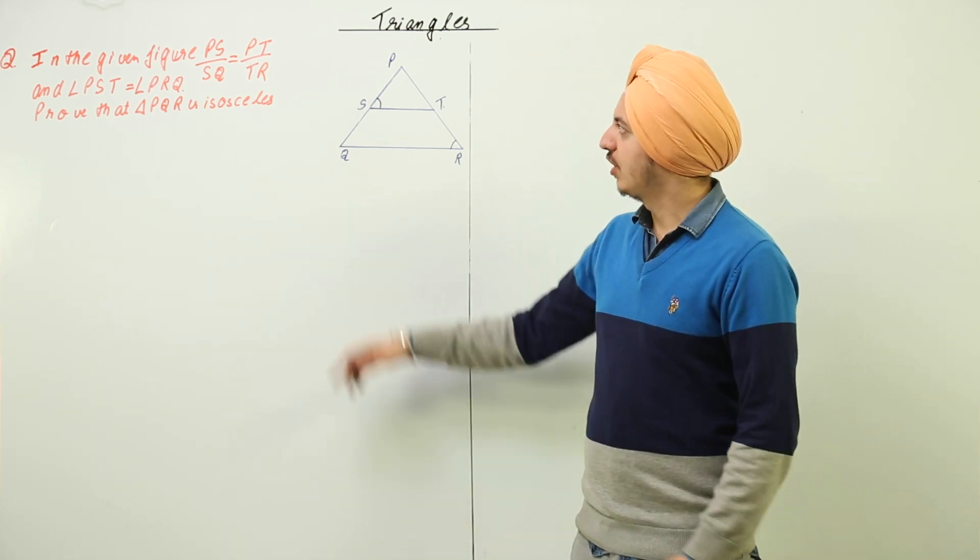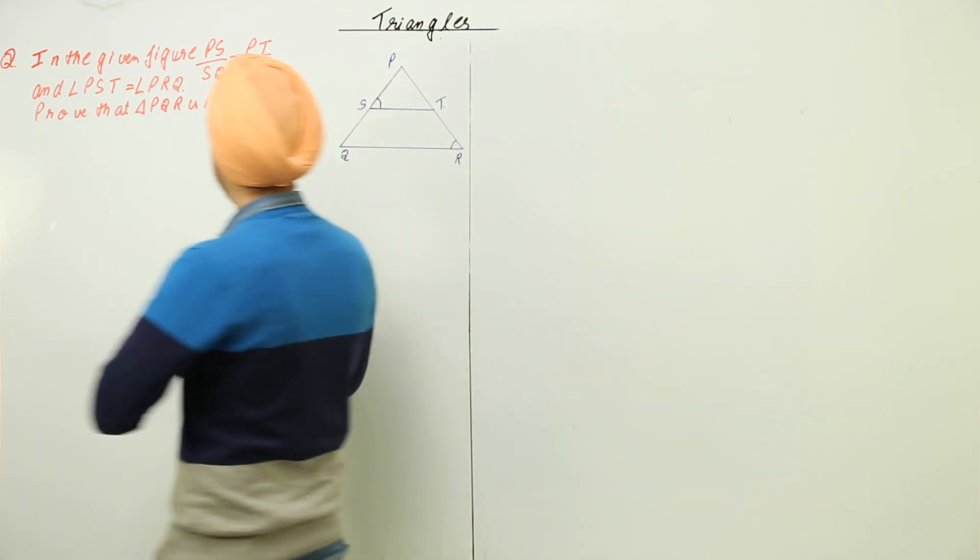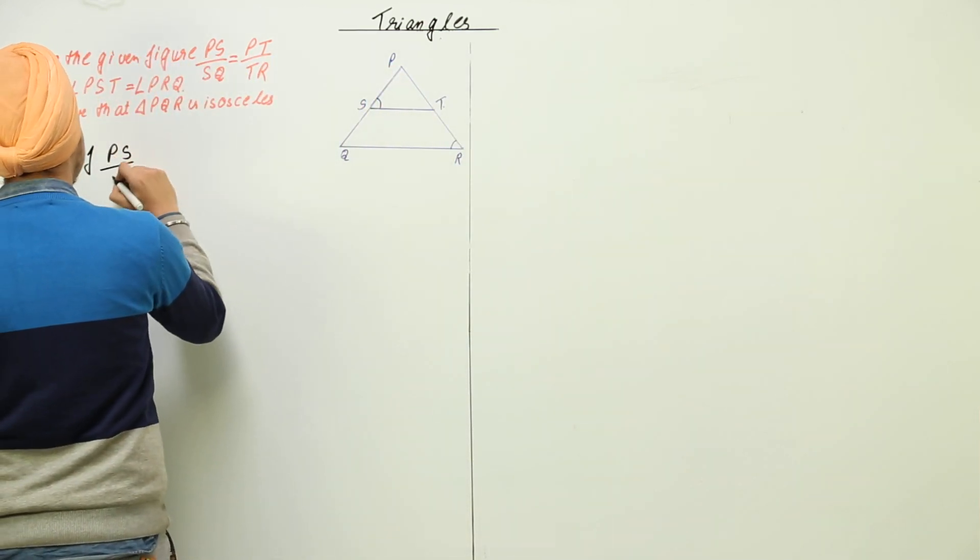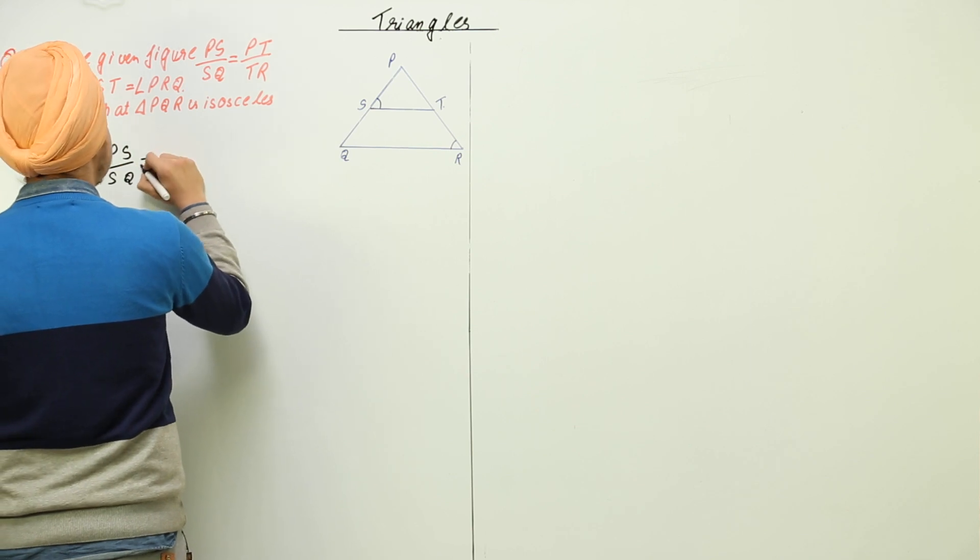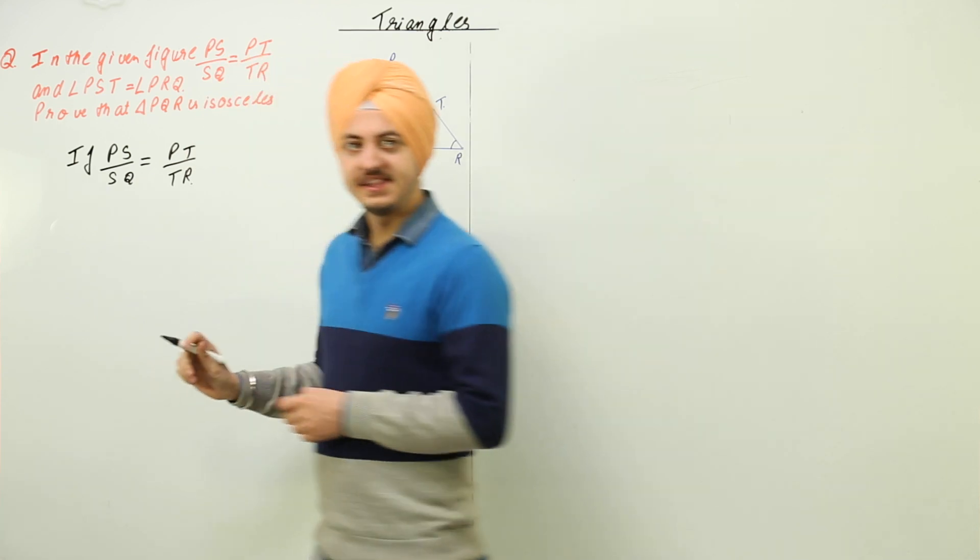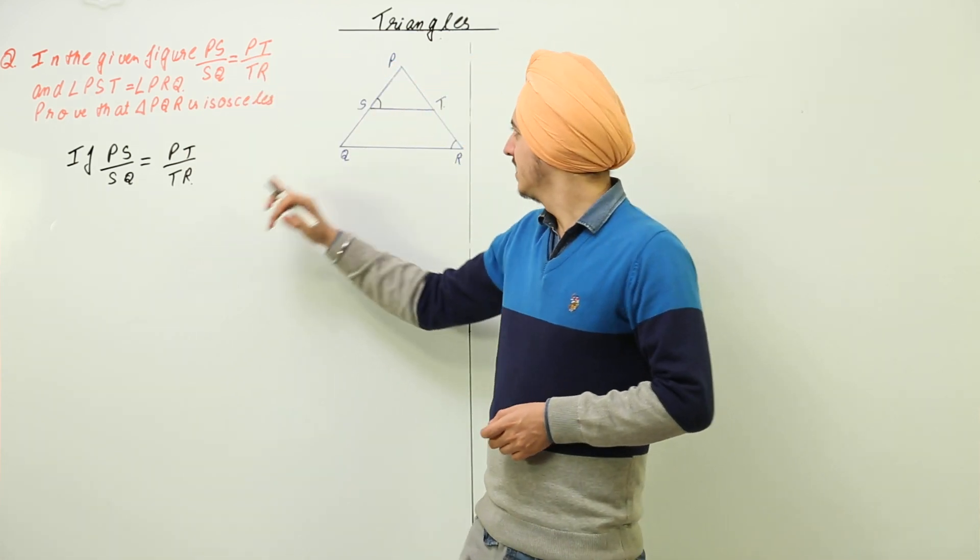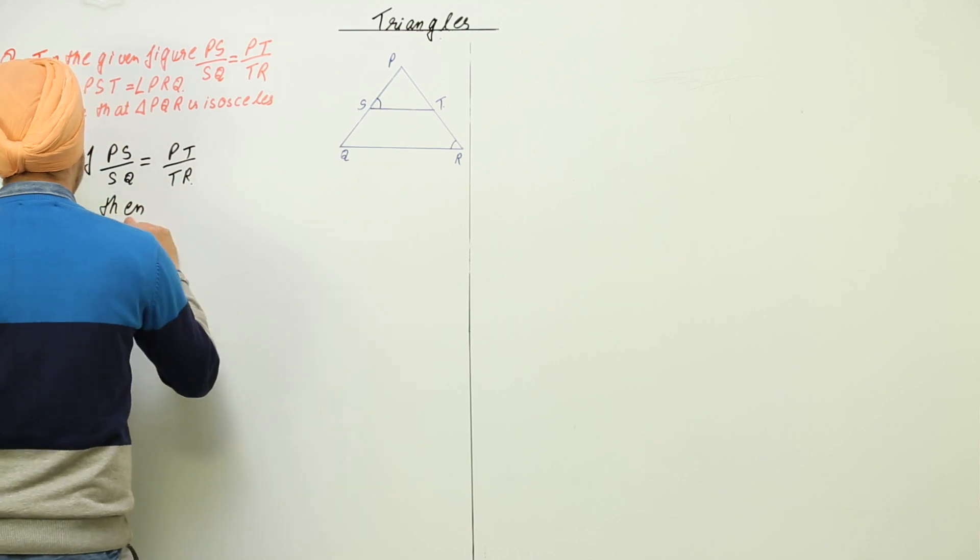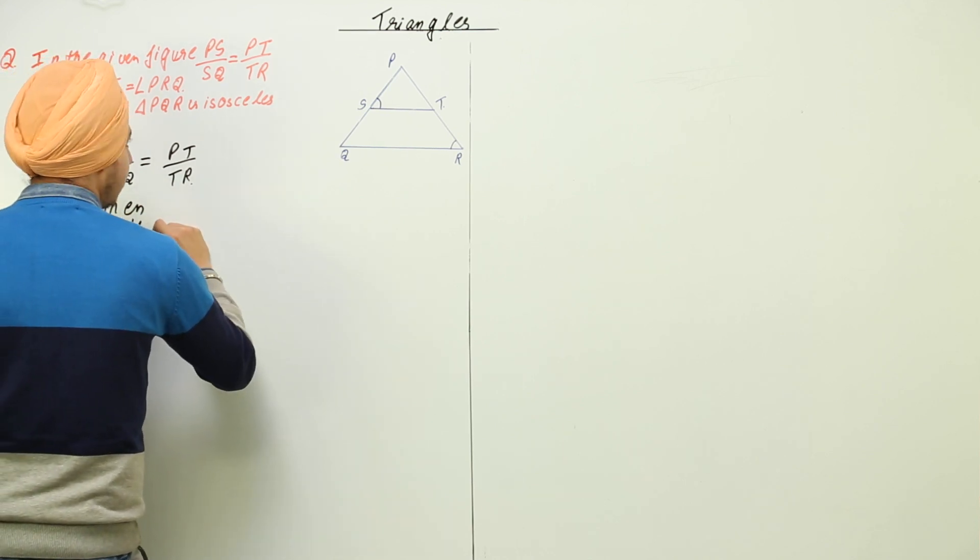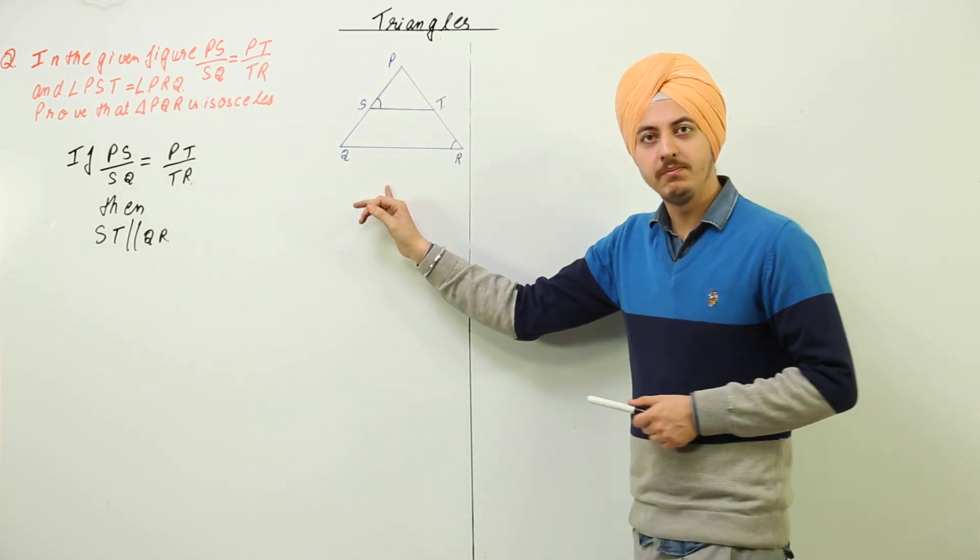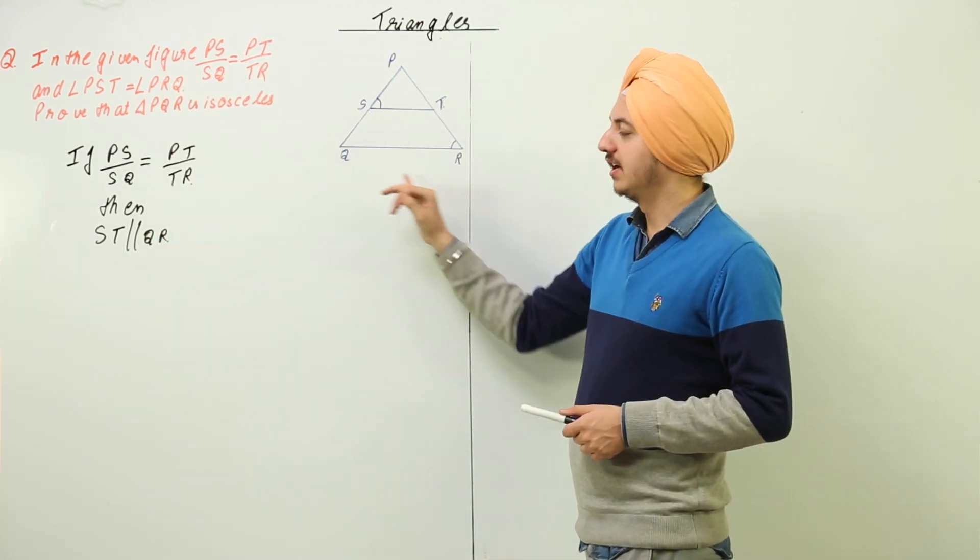Now first of all we know that if PS upon SQ is equal to PT upon TR, then what happens? Then line ST is parallel to line QR. Am I correct? This is what we get from the theorem that ST is parallel to QR.